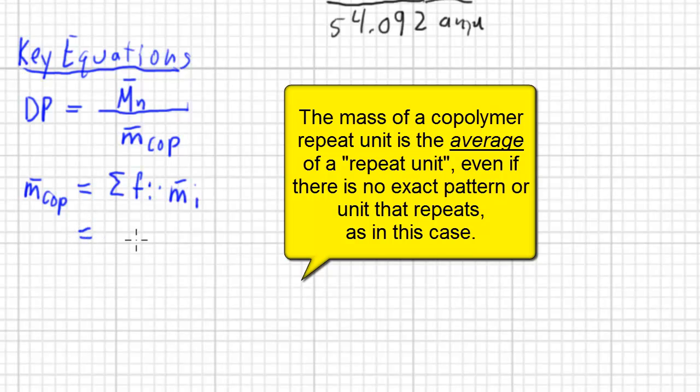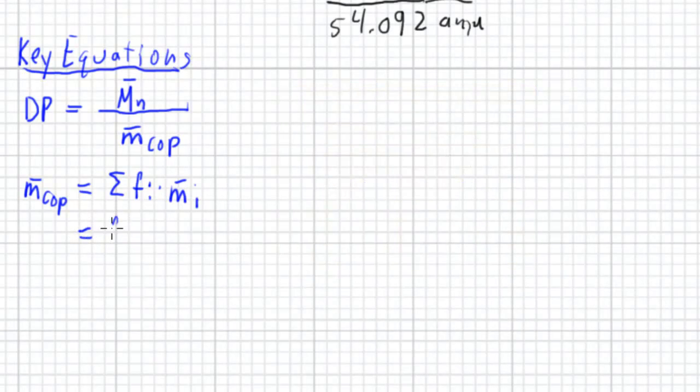Luckily, we have everything we need for this one. We have the fraction of acrylonitrile times its molecular weight plus the fraction of the butadiene times its molecular weight.